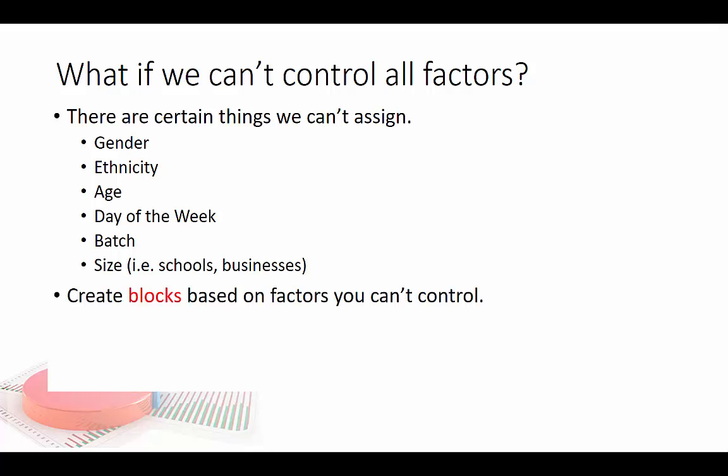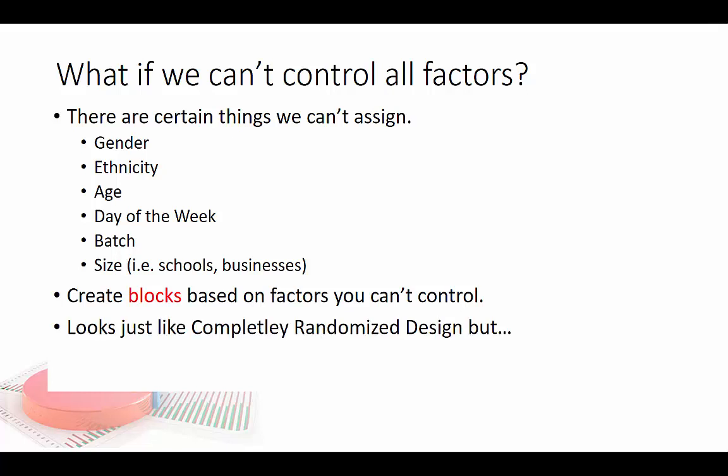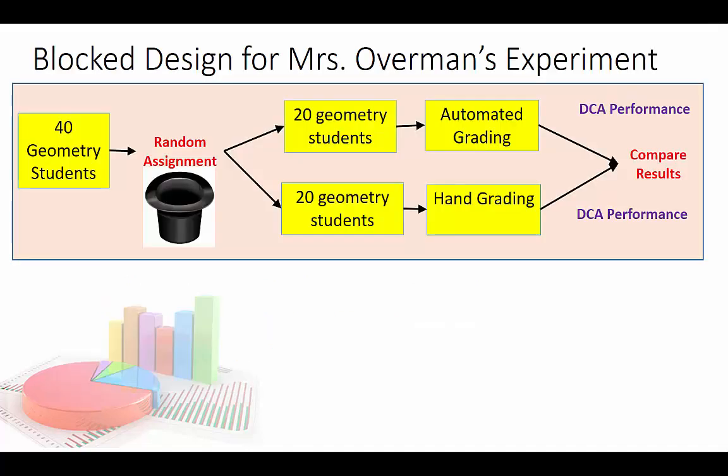The way we handle this is to create blocks based on factors you can't control. These are a lot like strata from stratified random sampling, but remember: stratified is used for sampling, while blocks are used for experiments. It looks just like a completely randomized design most of the time, except you run a separate experiment for each block.